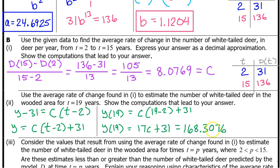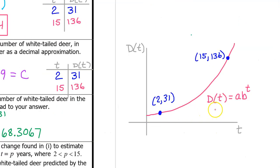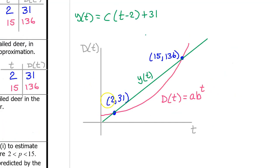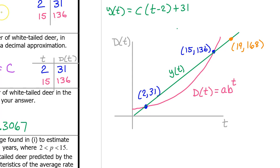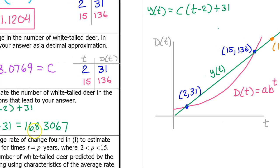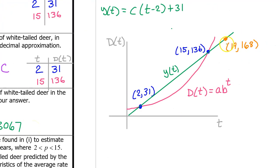Note: in the original recording there was a typo — please ignore any instance of 67 where 76 should appear. D of t is an exponential function of the form a times b to the t power, so it's a concave up increasing function. The secant line y of t passes through the two input-output pairs. We used the secant line to estimate the number of white-tailed deer at t equals 19, which is four years past t equals 15, estimating approximately 168 deer.